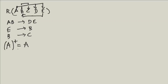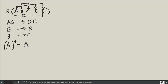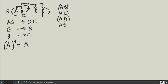When this happens, I must combine A with the other attributes. So let me combine A with B, A with C, A with D, and A with E. Now I'm going to calculate the closure of each of these combinations.